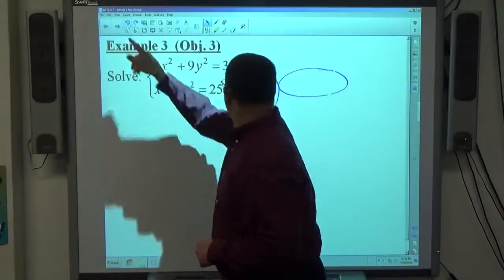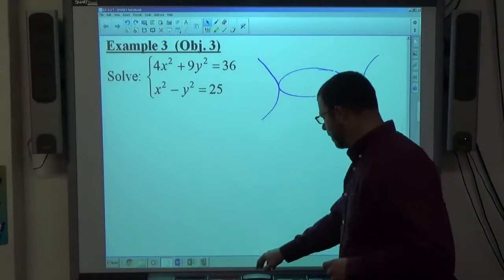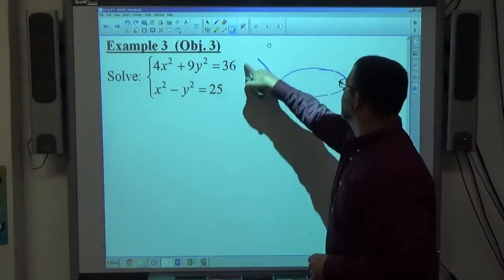If that one is a little bit further over, now it's one. So you can have 4, 3, 2, 1, or zero. But the maximum number of solutions is four.